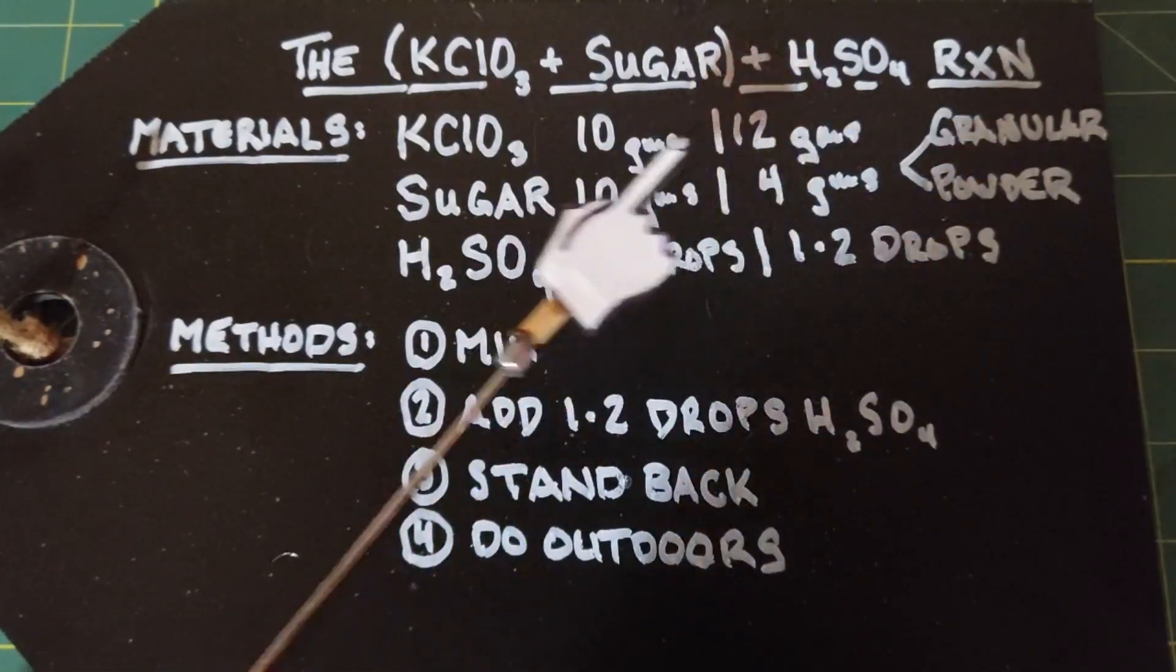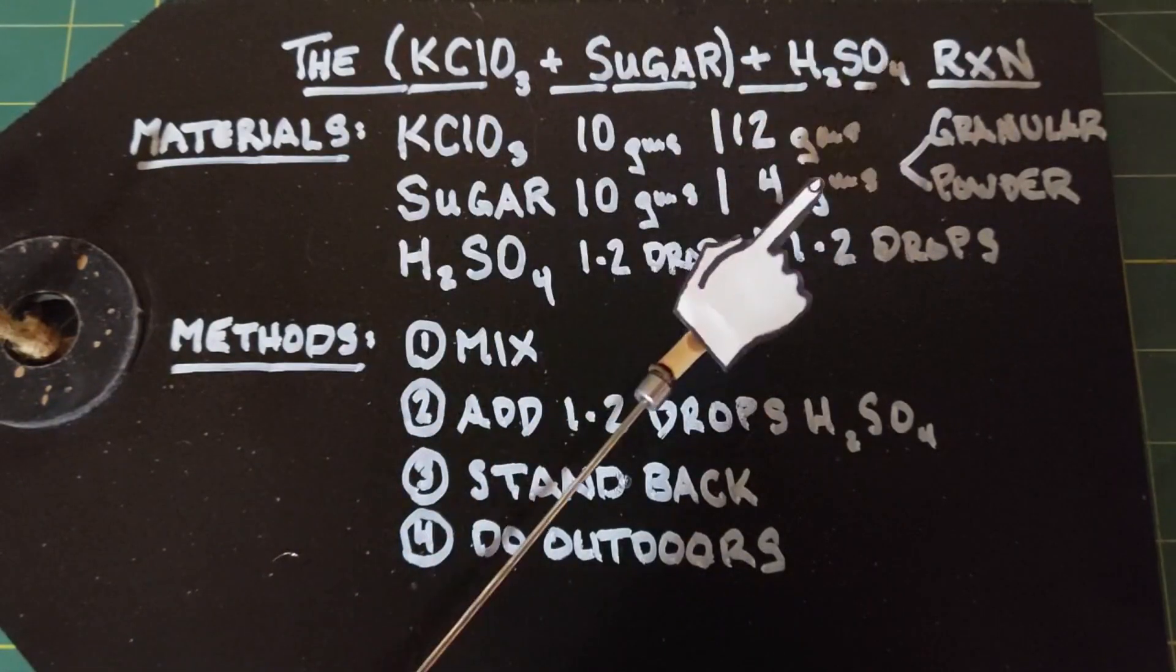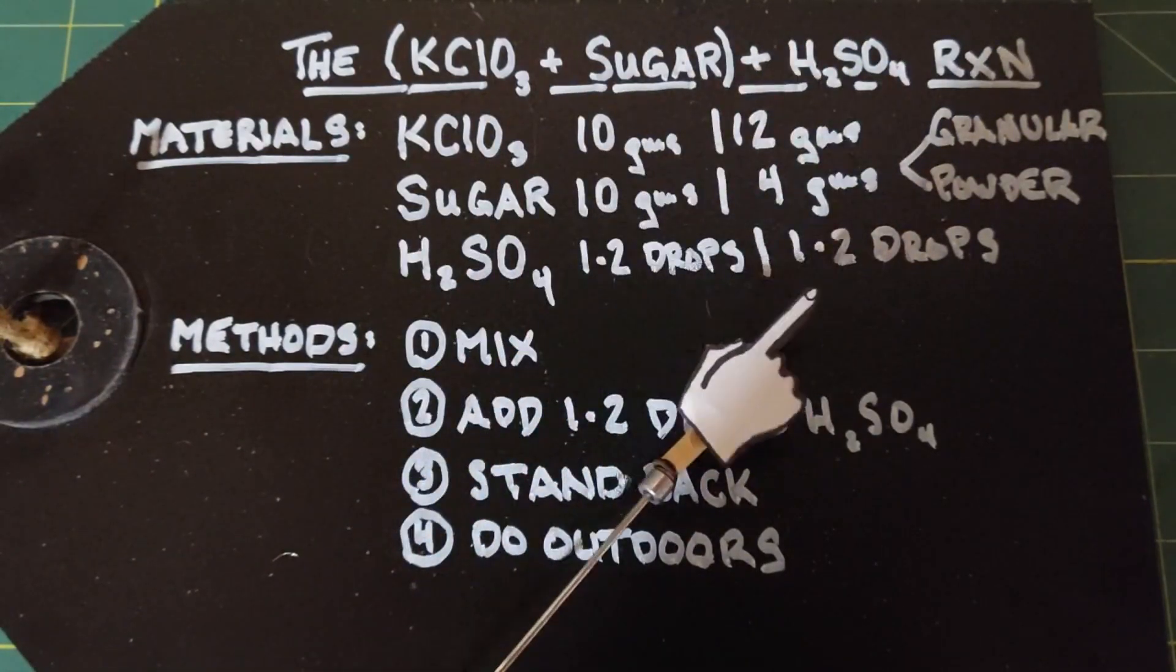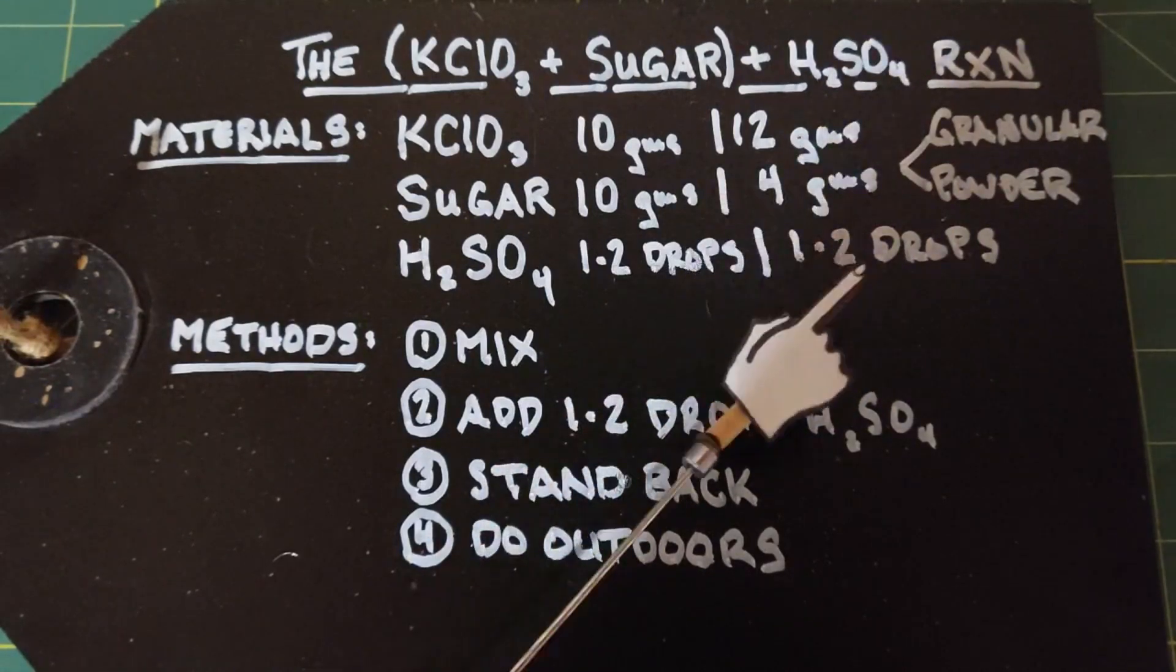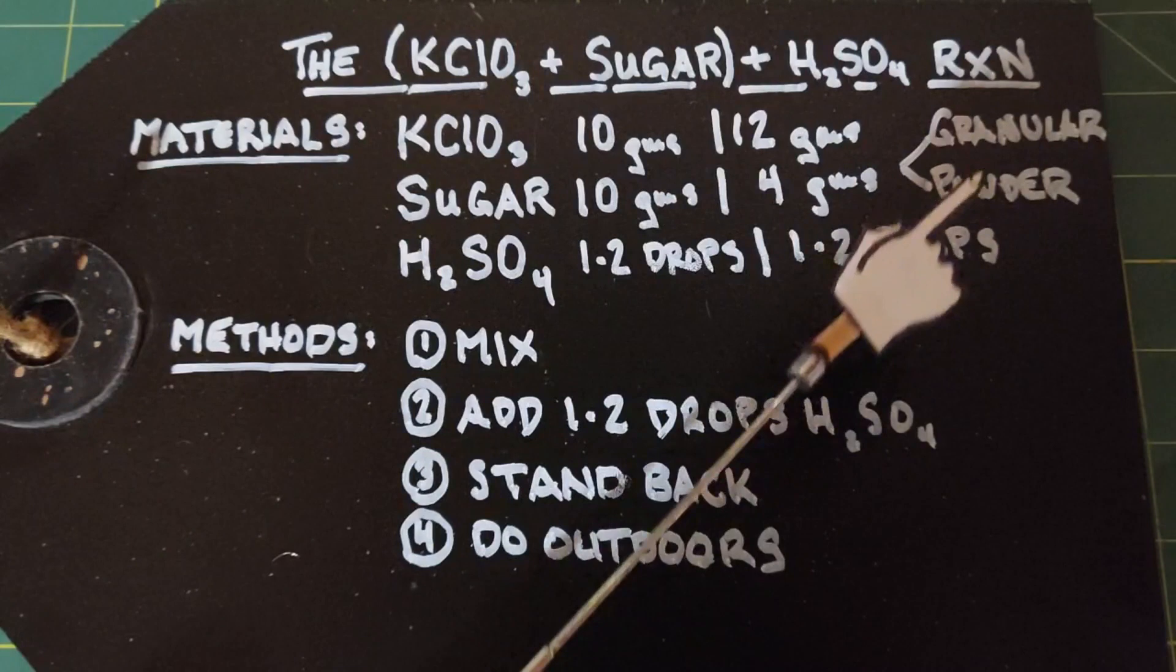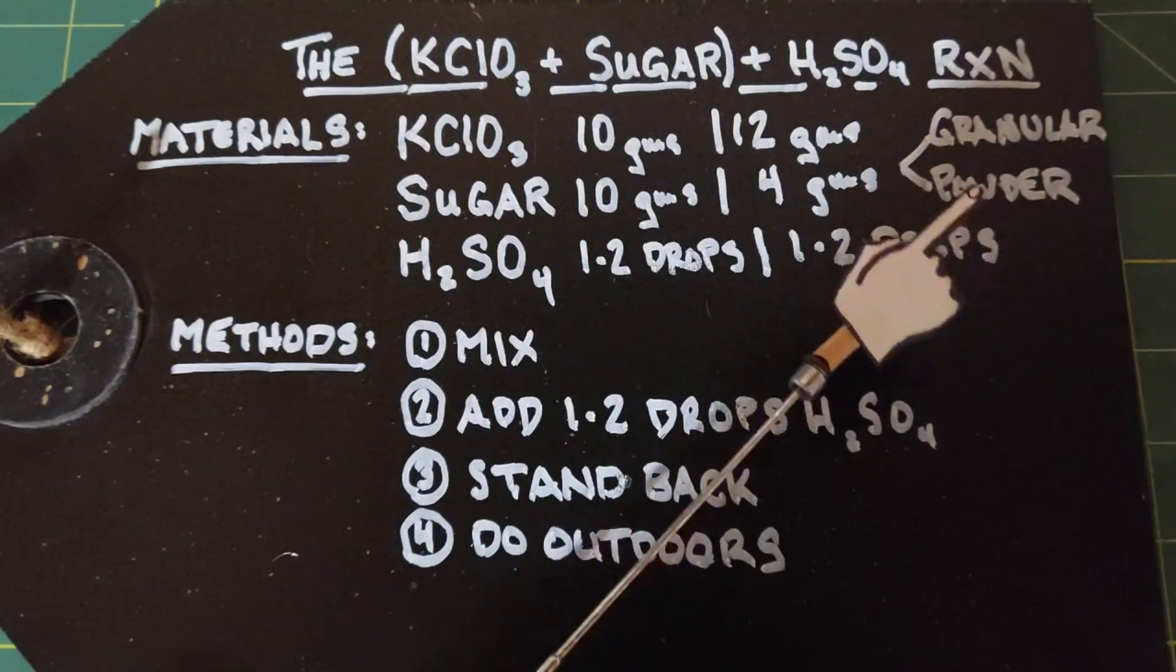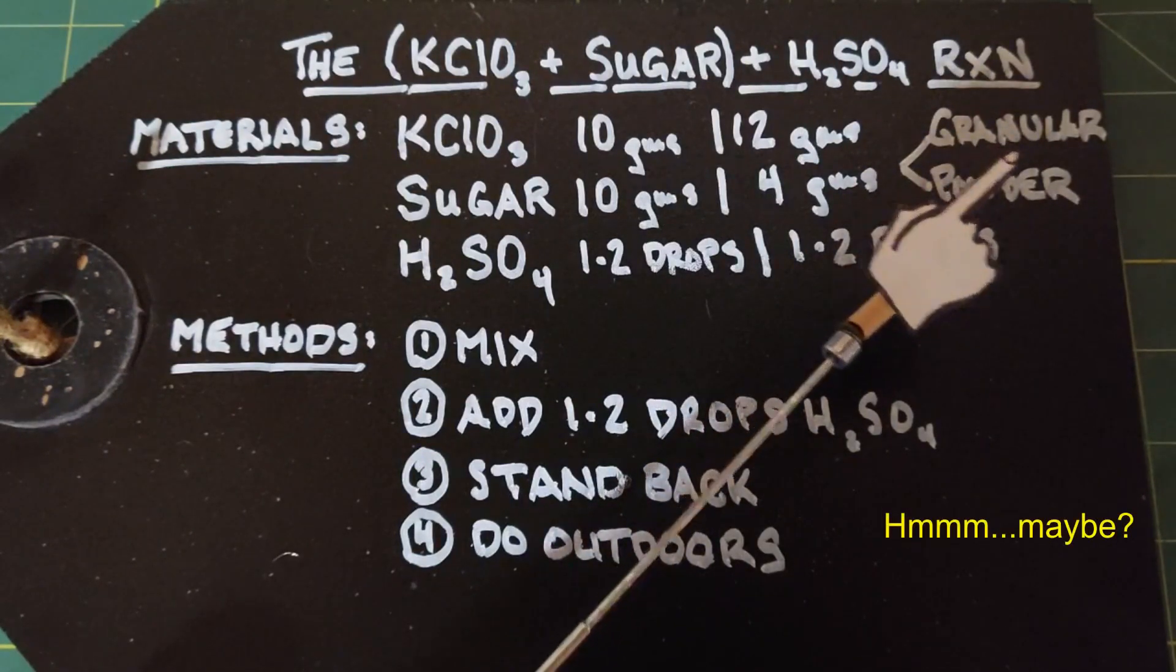I've also seen this listed as 12 grams of potassium chlorate and 4 grams of sugar, same amount of sulfuric acid, one or two drops, and so I'll be trying that also. I also plan on testing the difference between granular and powdered sugar, although I think granular is going to work better. I'm going to find out.